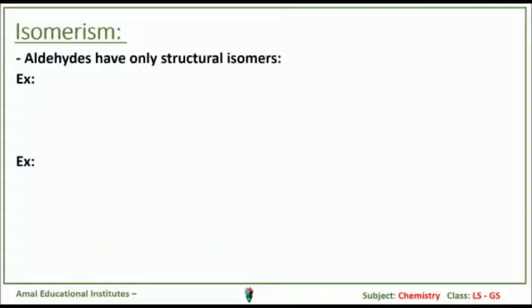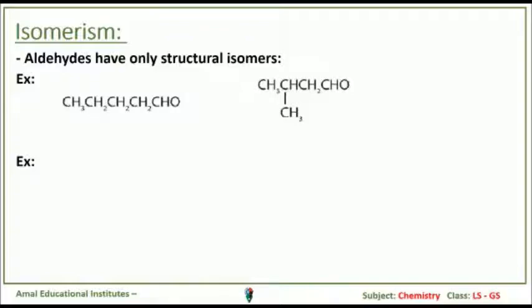Isomerism. Aldehydes have only structural isomers. For example, CH3-CH2-CH2-CH2-CHO, where CHO is the functional group. The second isomer is CH3-CH(CH3)-CH2-CHO, which is the functional group. They have different structures.